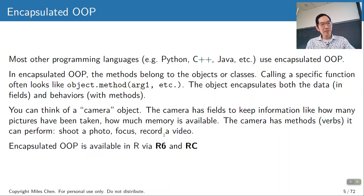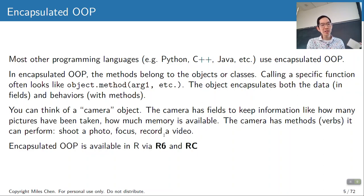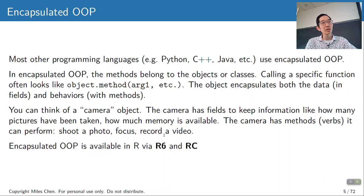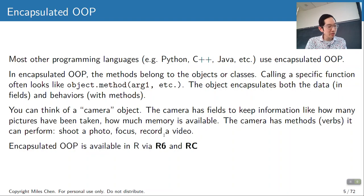A real-life example: say you have a camera object. The camera object keeps track of information like how many pictures it's taken and how much memory is available. The camera also has verbs it can perform such as shoot a photo, focus, or record video. R supports encapsulated OOP in R6 and reference class RC systems.